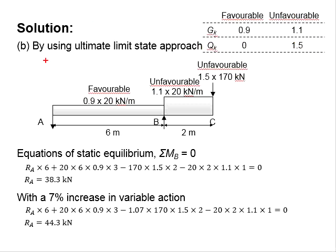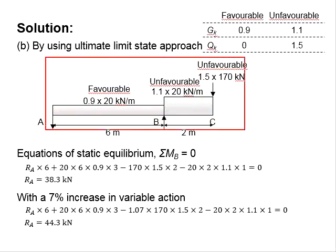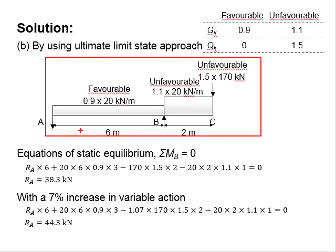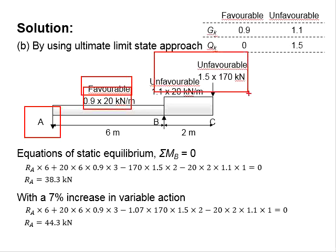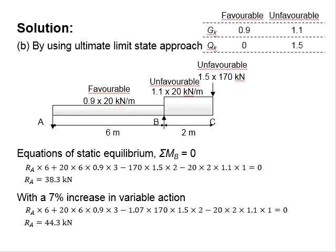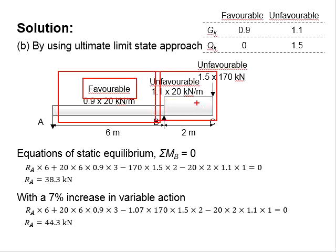Next, you need to determine the conditions which are favorable and unfavorable to the reaction here. The load is considered favorable when the reaction decreases due to the load, and it is considered unfavorable when an increase of the load will lead to an increase in terms of the reaction. In this case, the self-weight of this stretch is considered favorable while the self-weight at this stretch is considered unfavorable, and the variable action here is considered unfavorable.